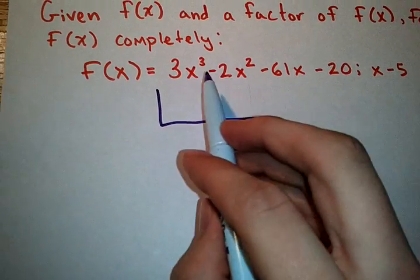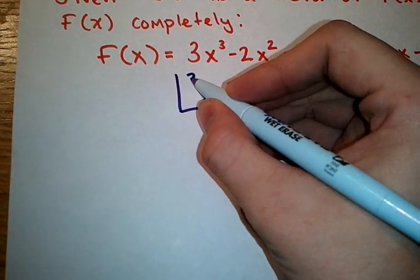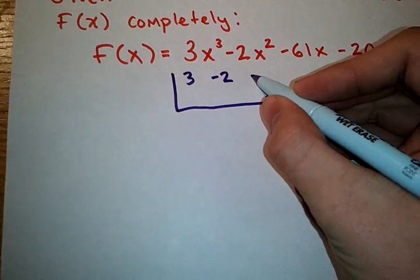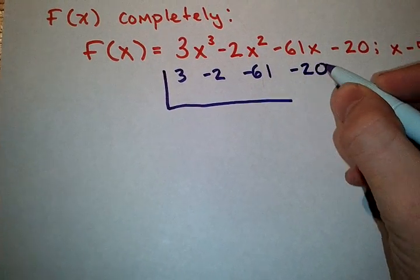We write the coefficients of the polynomial across the top. 3, negative 2, negative 61, and negative 20.